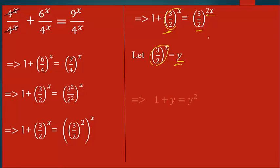We are going to replace this with y, so 1 + y equals y to the power 2. Let's rearrange this equation: I will get y^2 - y - 1 = 0.